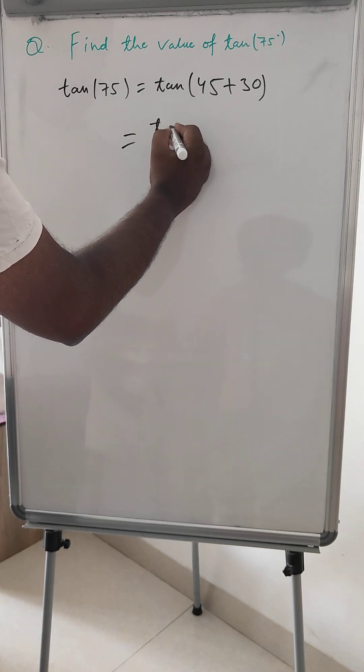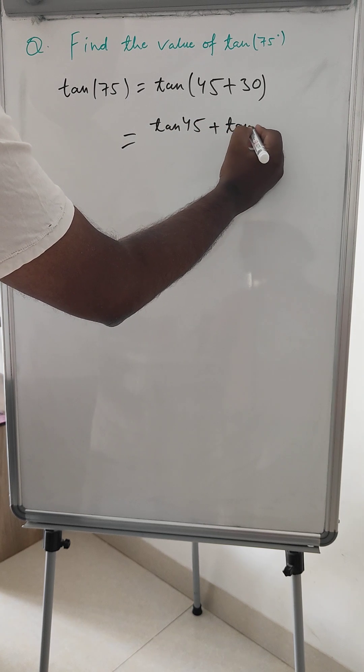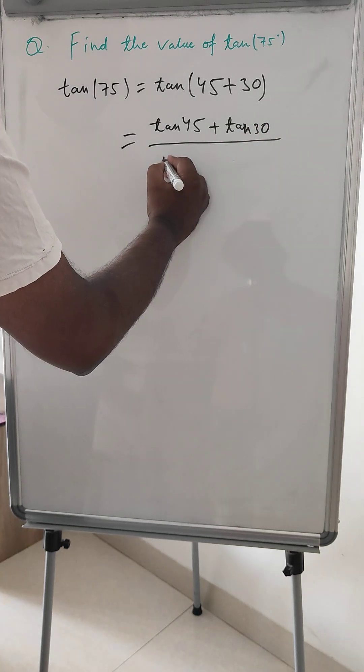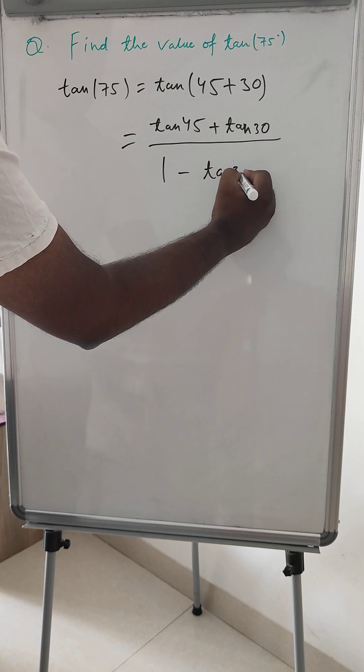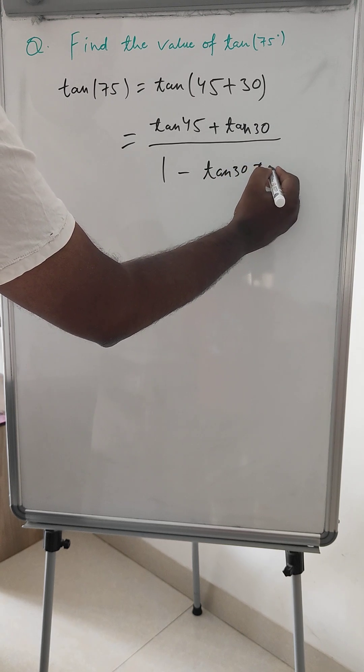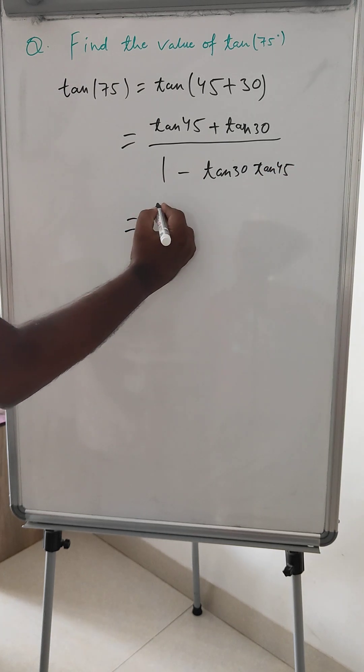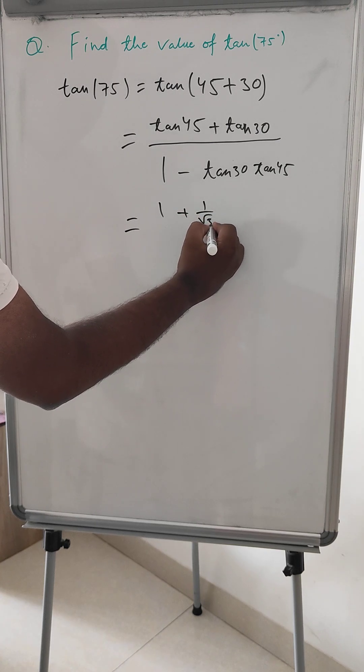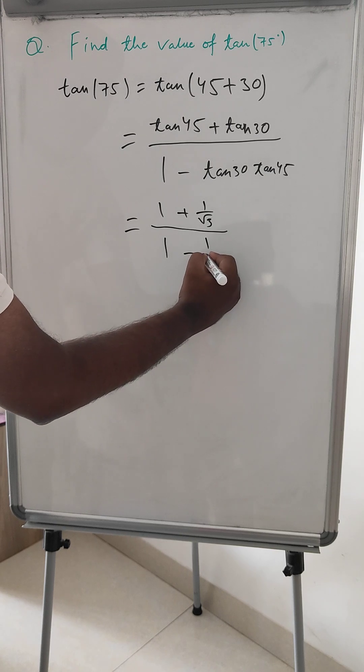Now we apply this formula: tan 45 + tan 30, divided by 1 - tan 30 × tan 45. Substituting the values, we get 1 + 1/√3 in the numerator and 1 - 1/√3 in the denominator.